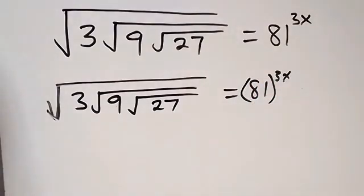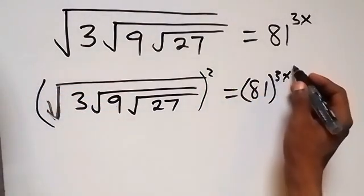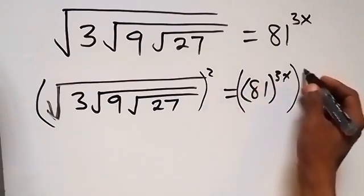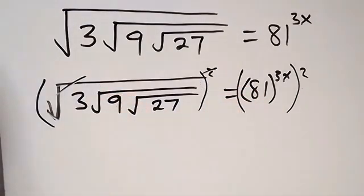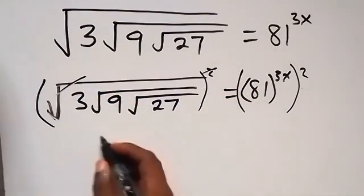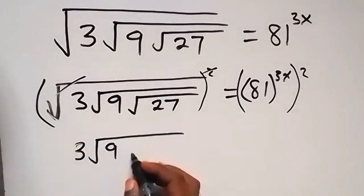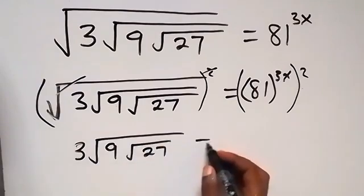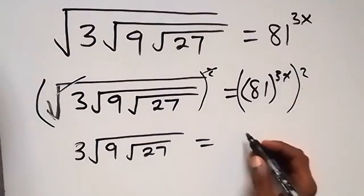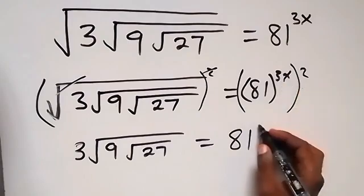When we take the square on both sides, we square this side and we square the other side as well. The square removes the first square root, and we are left with 3 times root 9, then under that root we still have root 27. On the right side, by the law of indices the power multiplies, giving us 81 raised to power 2 times 3x, that would be 6x.